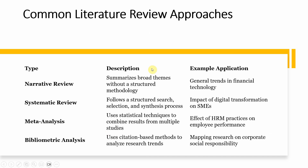There are common literature review approaches: narrative review, systematic review, meta-analysis, and bibliometric analysis. In a narrative review, you summarize broad themes — for example, general trends in financial technology. A systematic review follows a more structured approach based on synthesis — for example, assessing the impact of digital transformation on SMEs — starting with a research question, explaining how one variable influences the other, based on extensive search of available literature, often within a specific timeframe such as 2001 to 2025.